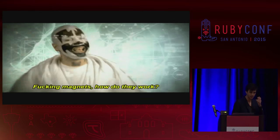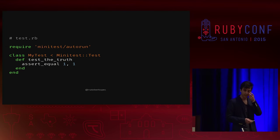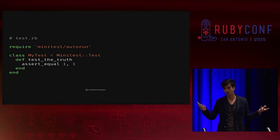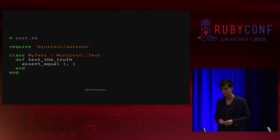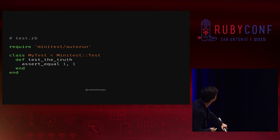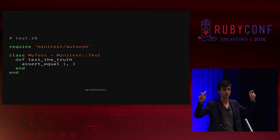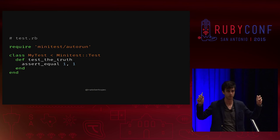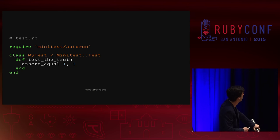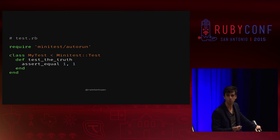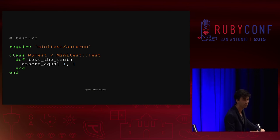You might be thinking, Nate, you've talked for about 15 minutes and we haven't looked at a single line of code — and I agree. So let's talk about Minitest. How does it work? Here's a typical, extremely simple Minitest test. The concepts Minitest requires you to understand: we require something — fine, I'm a Rubyist, I know what requiring does. There's a class — I've used those. And it inherits from something called Minitest::Test.